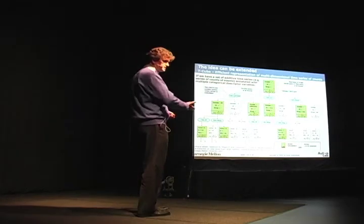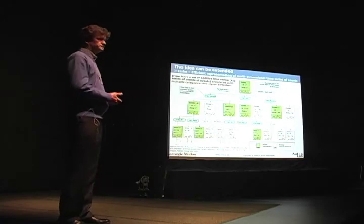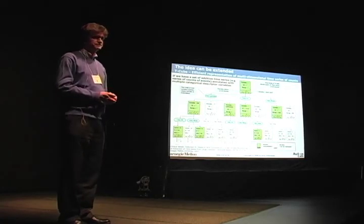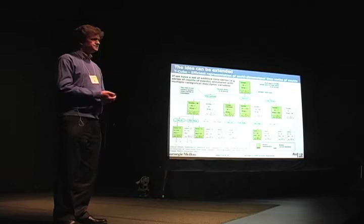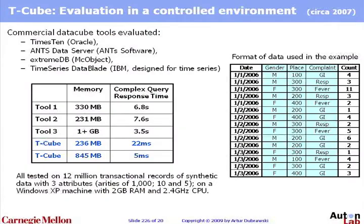We extended this technology to represent multivariate data of time series of events, which is very typical for many crisis mapping scenarios. That led to the development of a new data structure that we call the T-cube, and it evaluates very favorably against commercial alternatives. In fact, we observe one to three orders of magnitude speed-ups in the time necessary to retrieve answers to complex time series queries.